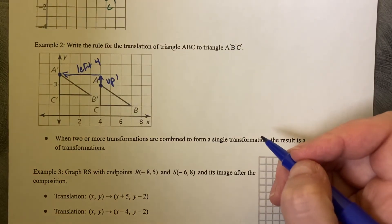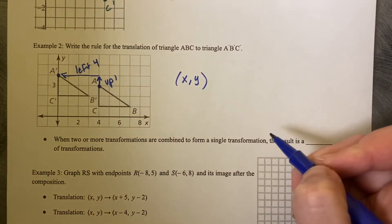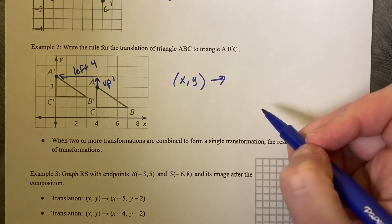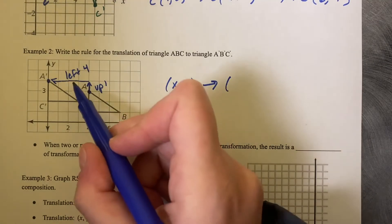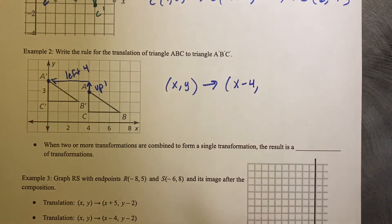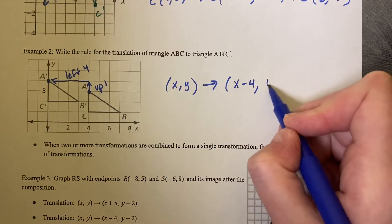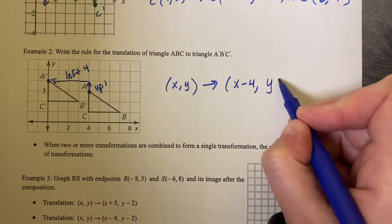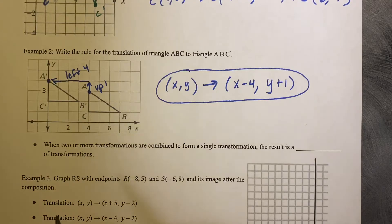So then if we're going to write this rule, we can say that we start with (X, Y). That's your starting point. And then you move to how you're changing your X values. So if I'm going to the left 4, it's going to be X take away 4. If I had added 4 to X, I would have gone to the right. And then now we want to take our Y values, and we want to go up 1, so plus 1. So this is our rule from triangle ABC to triangle A prime, B prime, C prime.